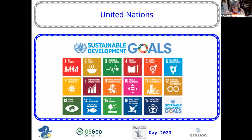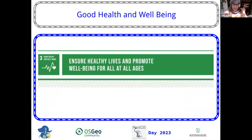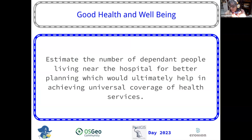PG routing can be used for many things. One thing that I feel is very important is that when you work in a project, you need to think that you are doing something for humanity. In the PG routing workshop, we have three examples of PG routing being used to solve three of the sustainable goals from the UN. We're going to talk about good health and well-being.